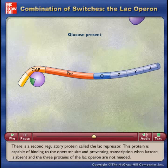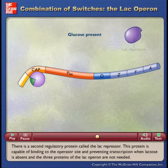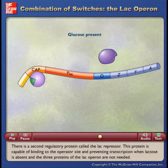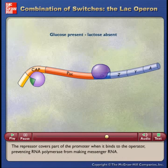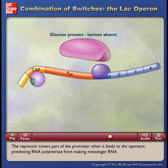There is a second regulatory protein called the LAC repressor. This protein is capable of binding to the operator site and preventing transcription when lactose is absent and the three proteins of the LAC operon are not needed. The repressor covers part of the promoter when it binds to the operator, preventing RNA polymerase from making messenger RNA.